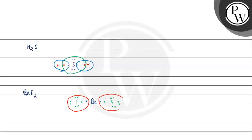After placing the electrons, we check the results. Each fluorine atom gets 4 electrons from lone pairs plus shares 2 bonding electrons, completing the octet of 8 electrons for each fluorine atom.